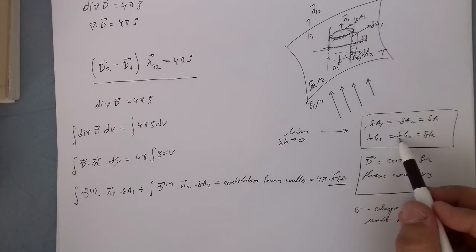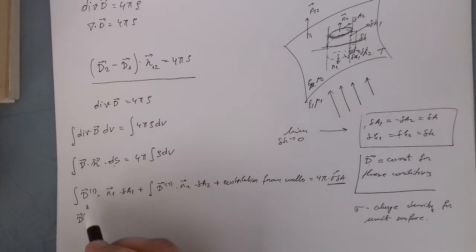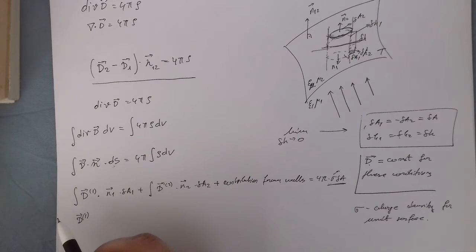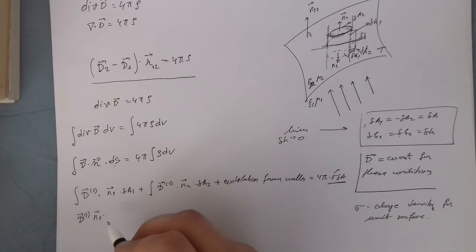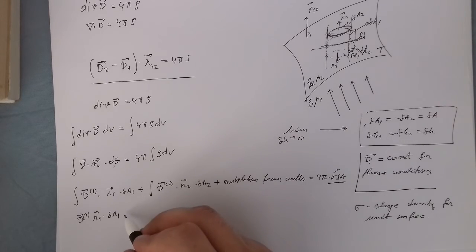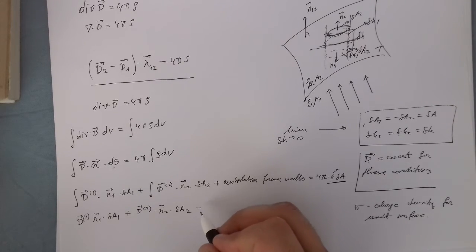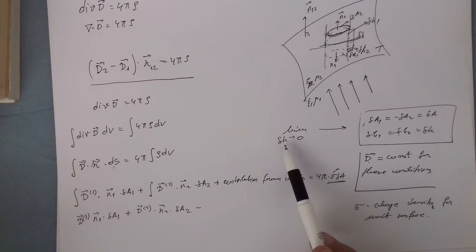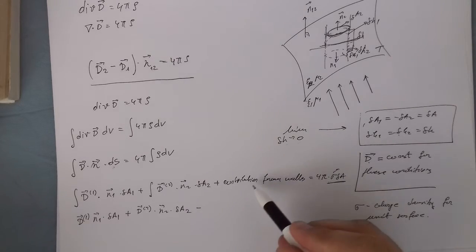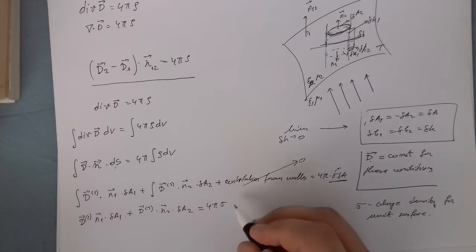Since D1 and D2 are constant, they come out of the integral. So we have D1 times N1 times delta A1 plus D2 times N2 times delta A2. When H goes to zero, we have no walls, so the contribution from the walls is zero. This equals 4 pi sigma delta A.